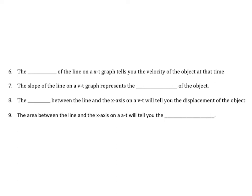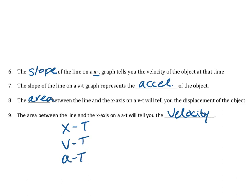This has been on almost every worksheet and practice thing we've done. Number six: the slope of the line on a position-time graph tells you the velocity of the object. Number seven: the slope of the line on a velocity-time graph tells you the acceleration. Number eight: the area between the line and the x-axis on a velocity-time graph tells you the displacement of the object. The area between the line and the x-axis on an acceleration graph tells you the velocity. We have three graphs in order: position-time, velocity-time, and acceleration-time. You can't skip over — we have to go one at a time.